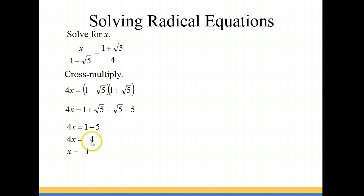So you have 1 minus 5, which is negative 4. Then you're going to divide by 4, so you get negative 1 for x.